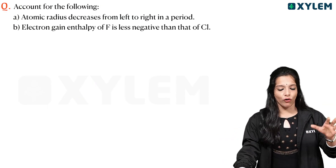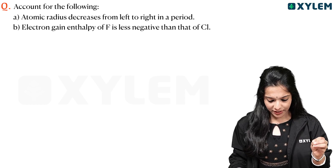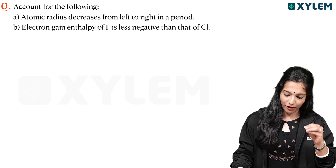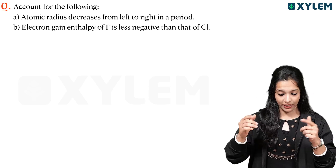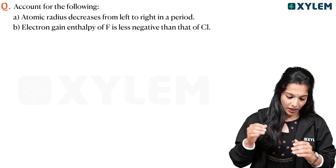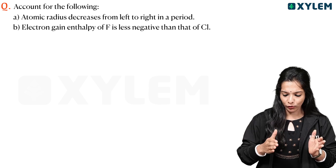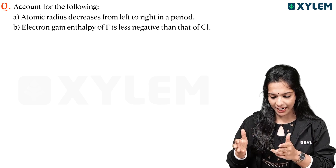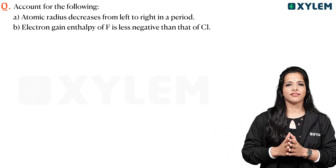Account for the following. First: atomic radius decreases from left to right in a period. Second question: electron gain enthalpy of fluorine is less negative than that of chlorine.